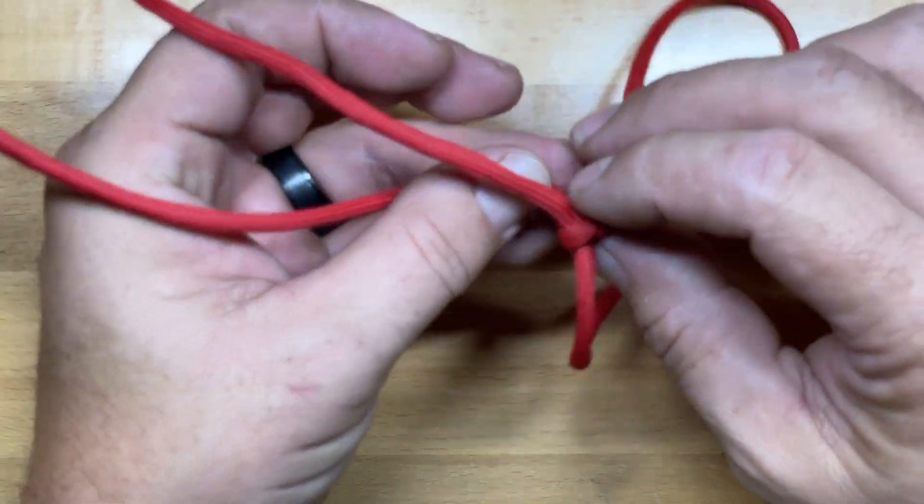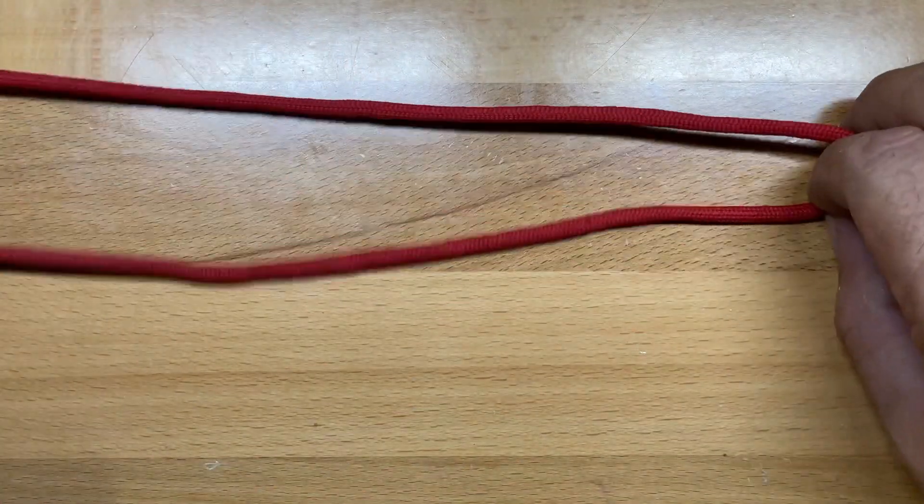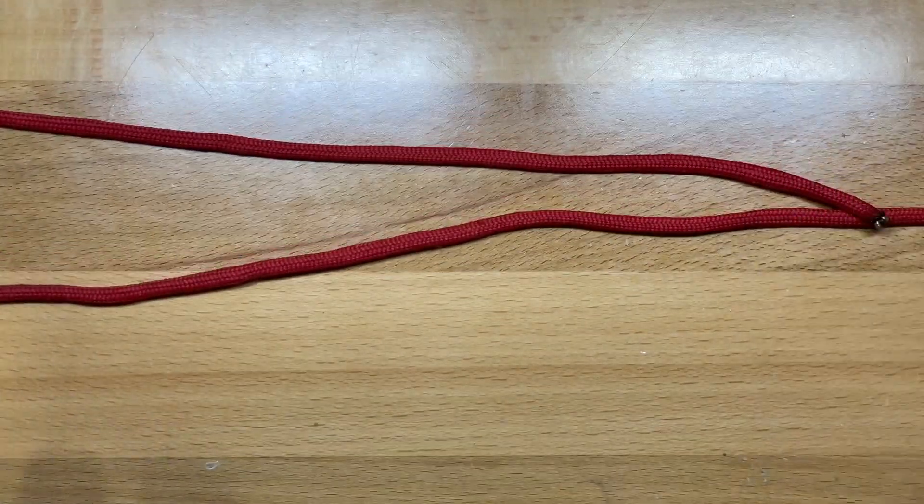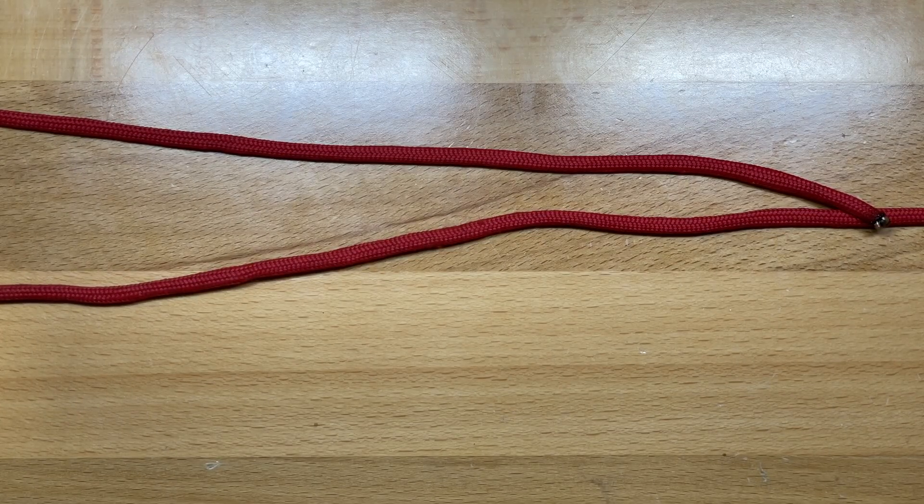But it can be used for a wide variety of other things too, such as I talked about before, rolling up tarps and blankets and stuff of that nature, or using it as a lashing knot. So that is the Canadian Jam Knot.